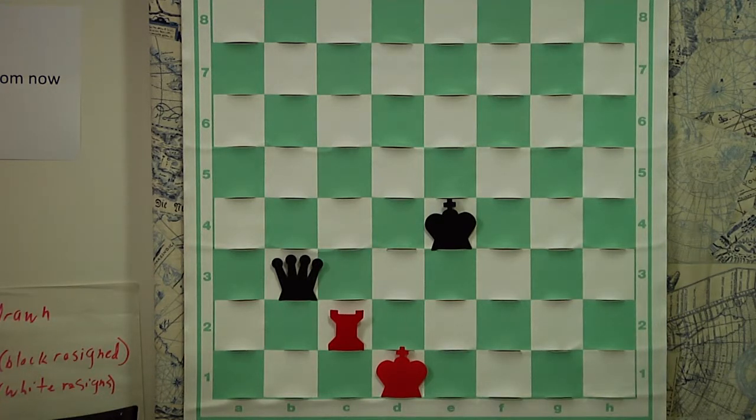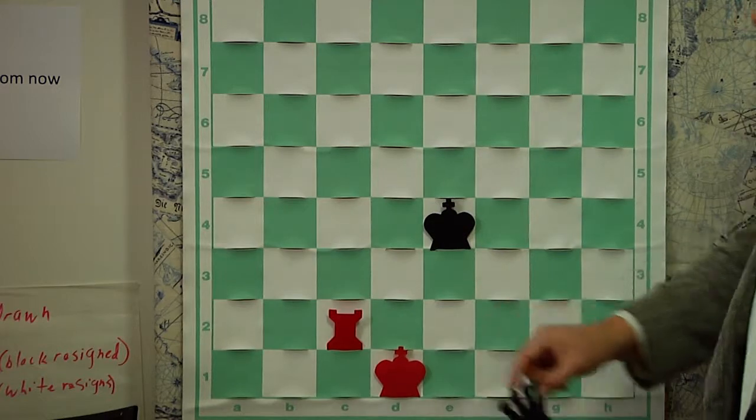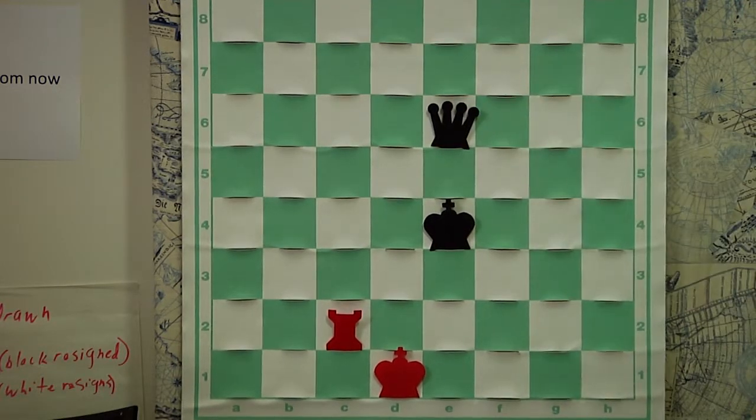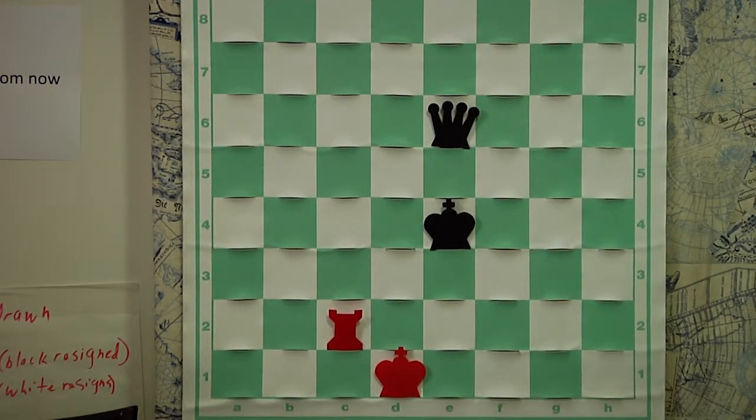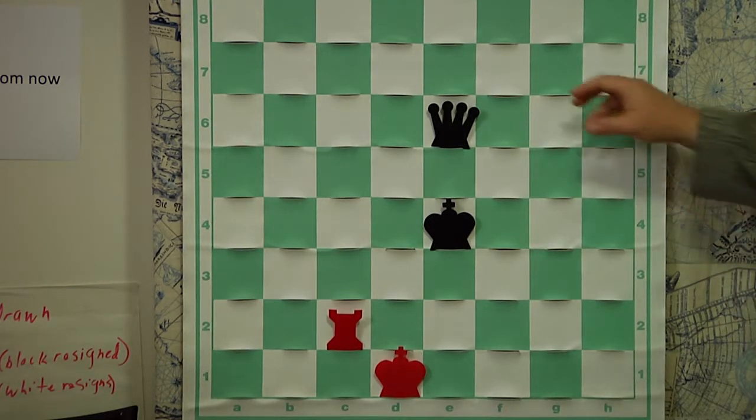Now, I am often asked, if my king is in check, can I put my opponent's king in check? Well, the answer to that is, for the most part, no. However, were you to get your own king out of check and in the process put your opponent's king in check, it would be legal. Let me give you an example of that.